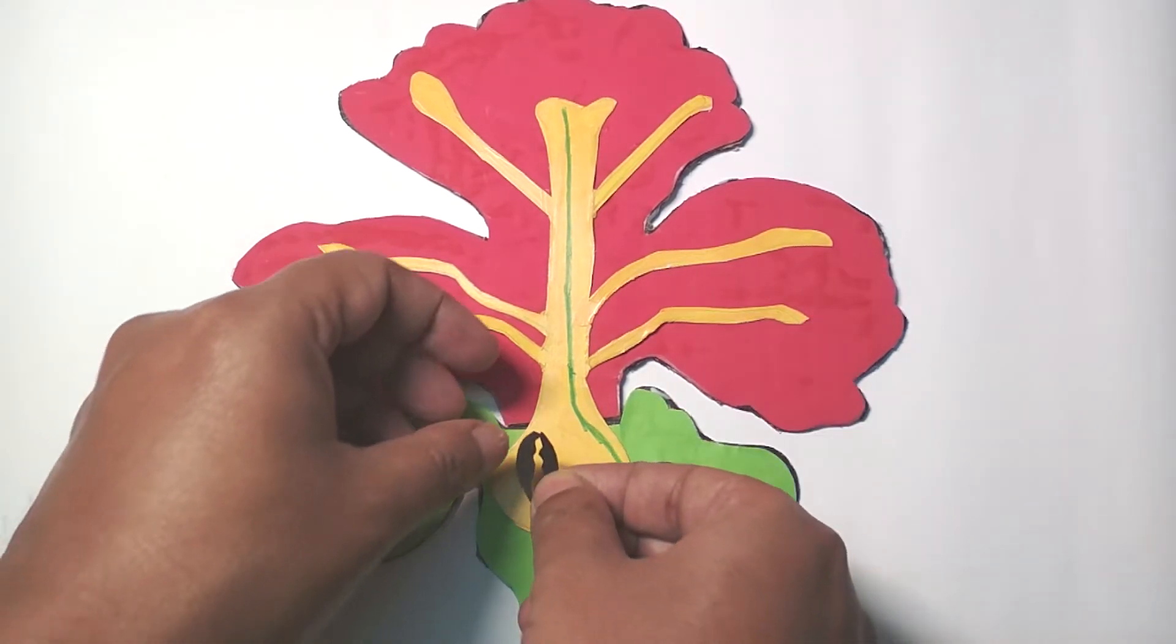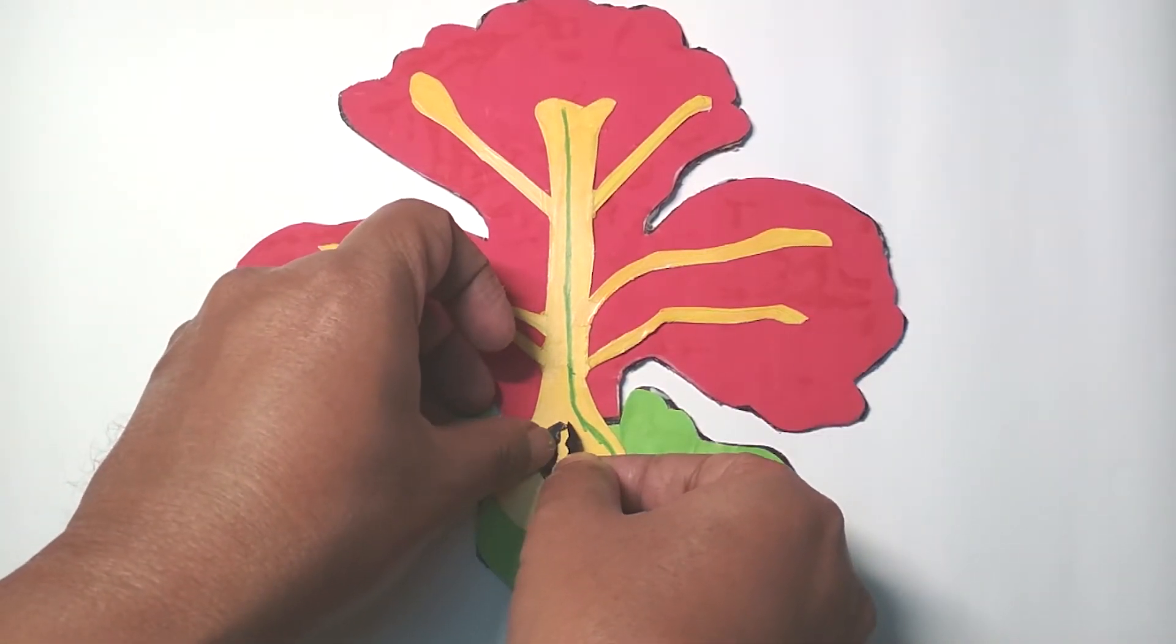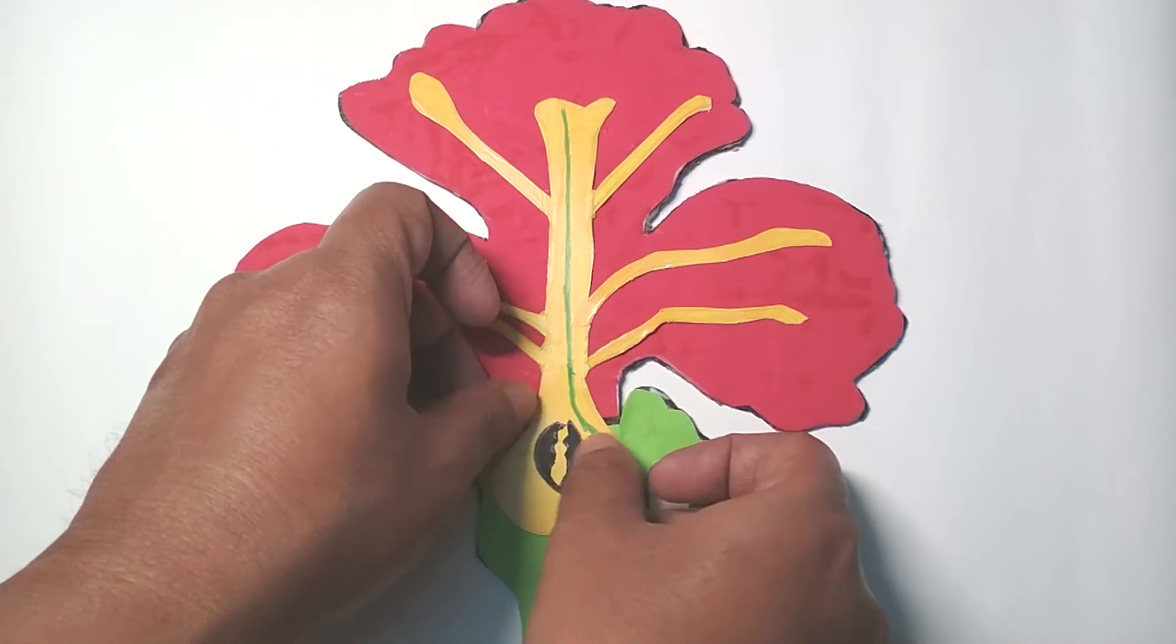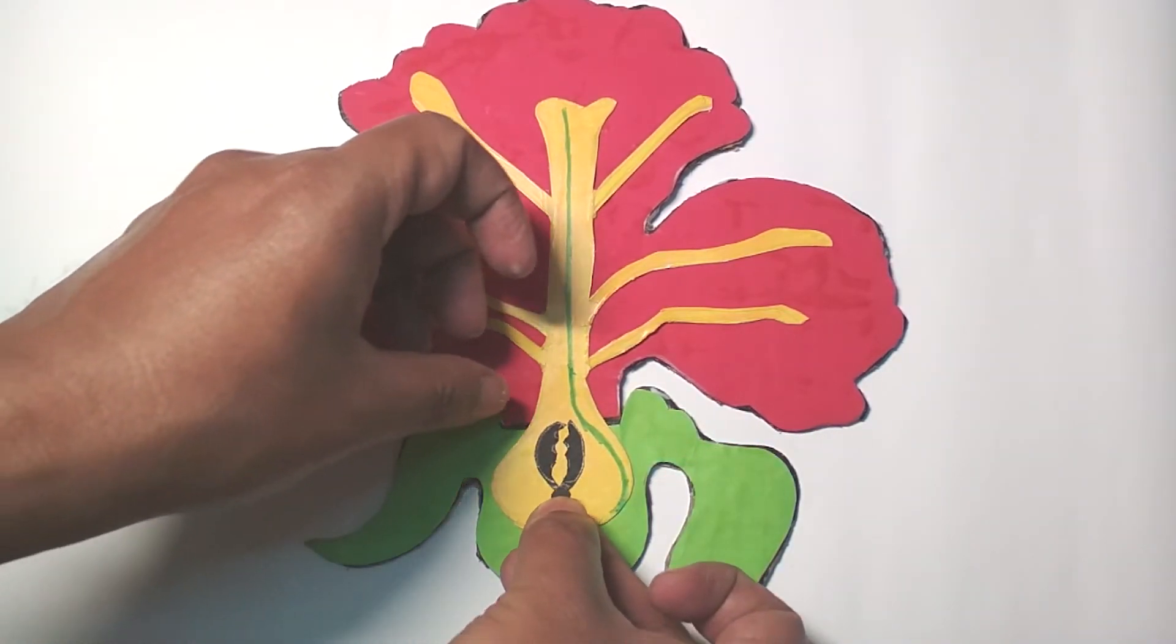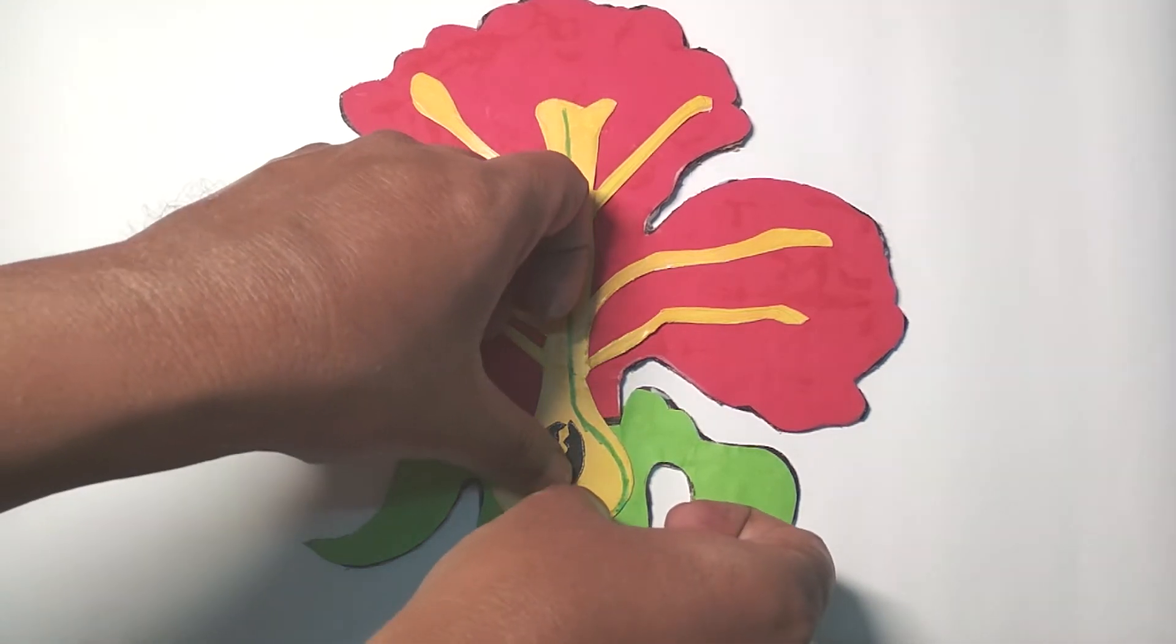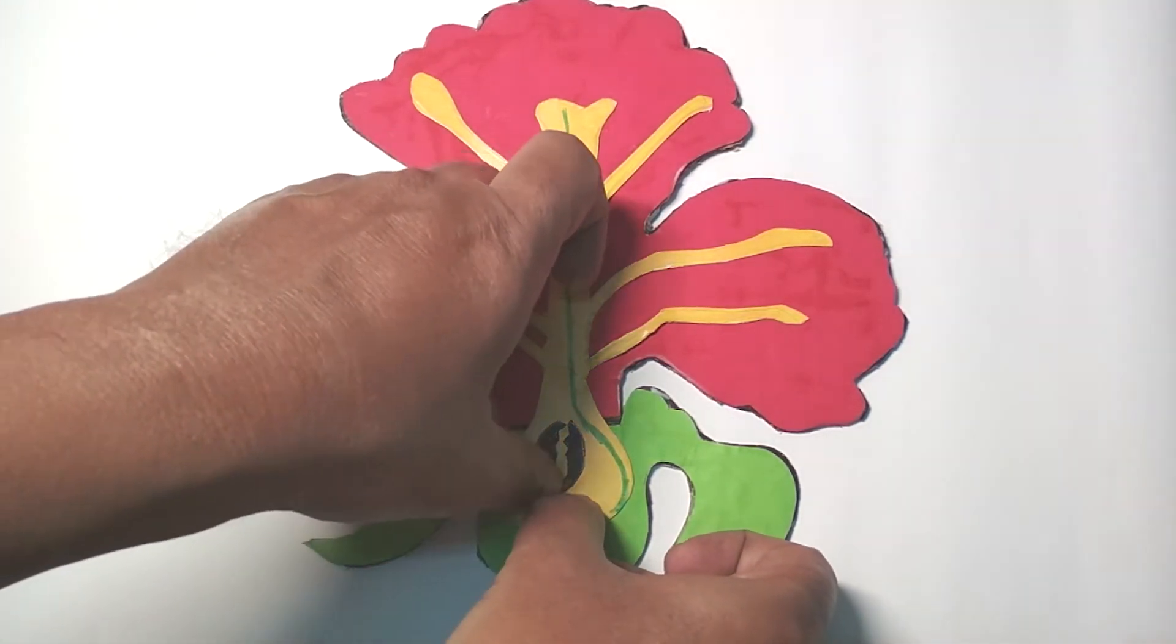You must design and assemble a 3D model of a hibiscus flower. All flower parts must be visible. The flower must resemble a real flower.